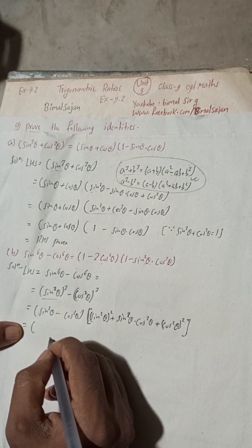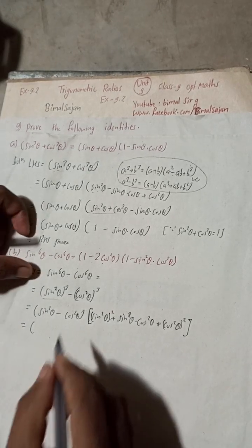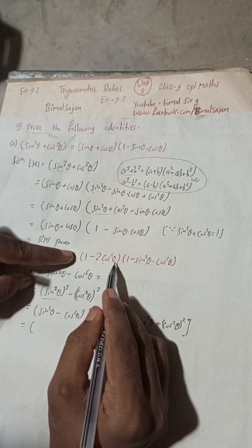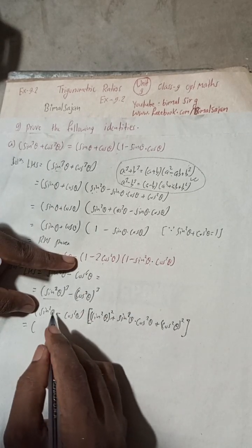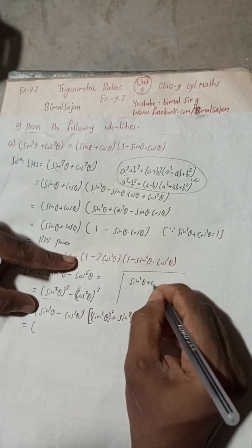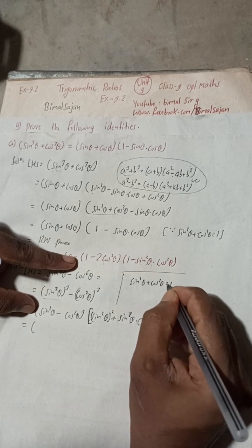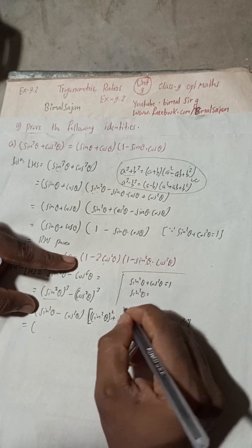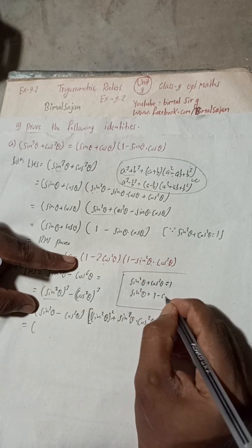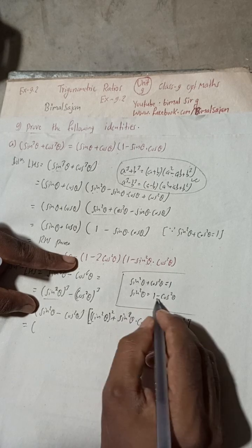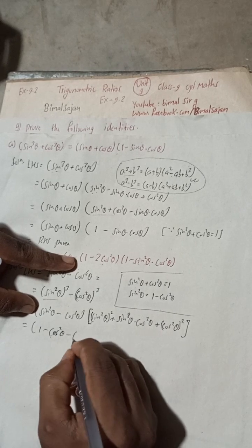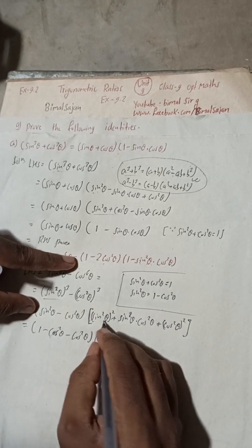Now we have (sin²θ − cos²θ) in the first bracket. We need to prove (1 − 2cos²θ), so I will change sin²θ using the identity: sin²θ + cos²θ = 1, which implies sin²θ = 1 − cos²θ. So I will write (1 − cos²θ − cos²θ) in the first bracket.